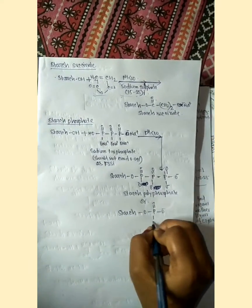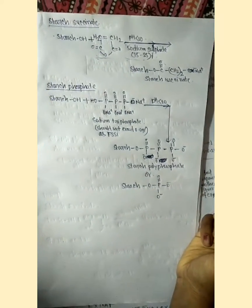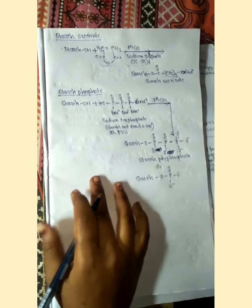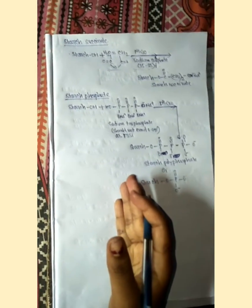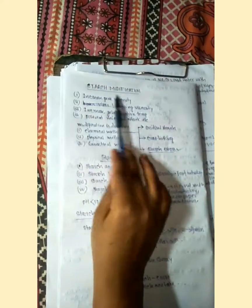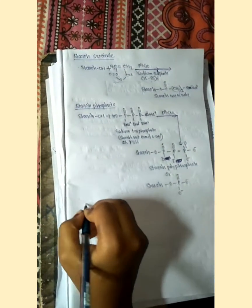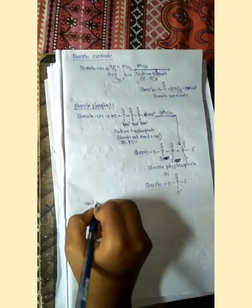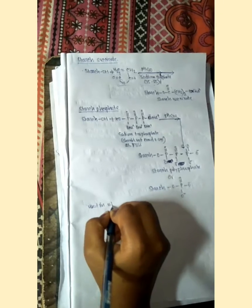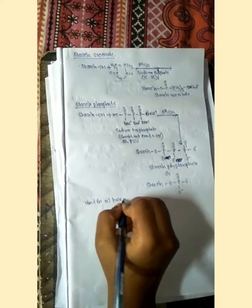These three - starch succinate, starch phosphate, and starch acetate - all have desired quality. Starch phosphate is used in oil-based products.